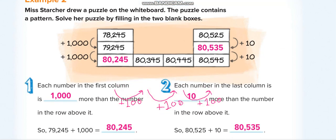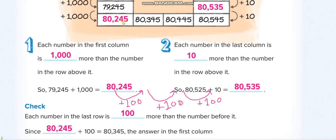This also we are going to add some fill-in-the-blanks. In this line they were adding 1,000 more, so this blank is 80,245. For this one they were doing 10 more, so this blank is 80,535. And for this one, I wrote it here, 100 more, so this blank is 80,245.